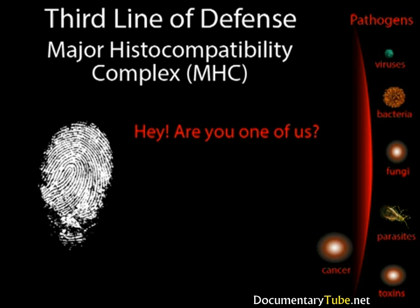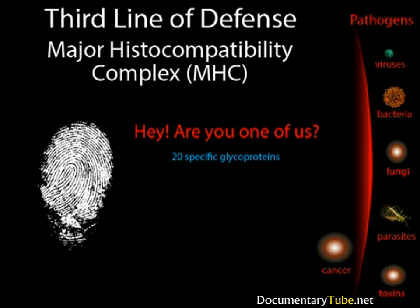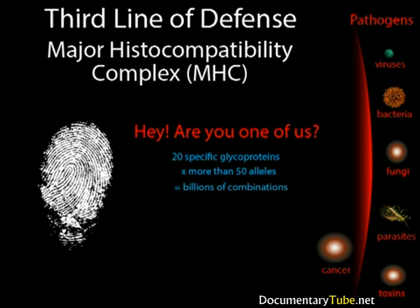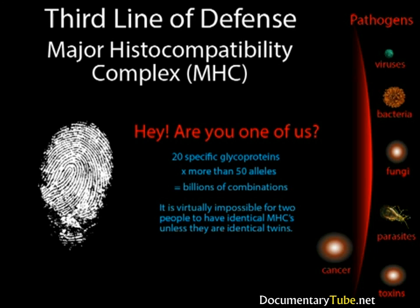How does the lymphatic system know your blood cells from other blood cells? There are about 20 specific glycoproteins which exist on the cell membrane of every cell in your body. This collection of proteins is called the major histocompatibility complex, or MHC. The structure of these proteins is determined by 20 genes in your DNA, each of which has more than 50 alleles. Thus, there are literally billions of combinations of these alleles, and each combination produces a unique MHC. It is virtually impossible for two people to have identical MHCs unless they are identical twins. The MHC, then, is a fingerprint for your cells — any cell that has your MHC will not be attacked by your lymphatic system.